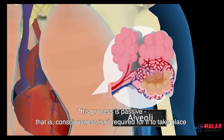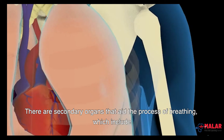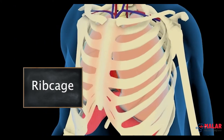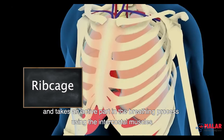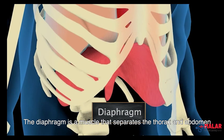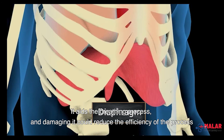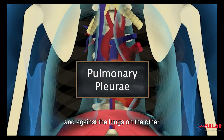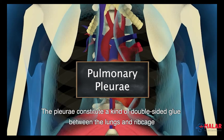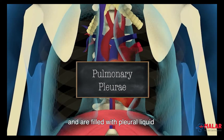There are secondary organs that aid the process of breathing. These include the ribcage, which physically protects the thorax, heart, and lungs, and takes an active part in the breathing process using the intercostal muscles. The diaphragm is a muscle that separates the thorax and abdomen; it aids the breathing process, and damaging it could reduce efficiency. The pulmonary pleuri is a membrane flush against the ribcage on one side and against the lungs on the other, constituting a kind of double-sided glue between the lungs and ribcage, and is filled with pleural liquid.